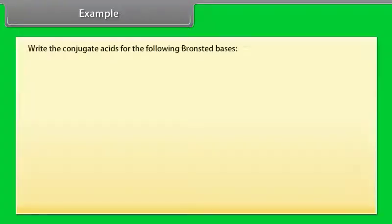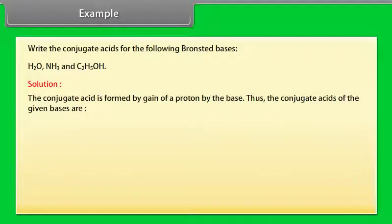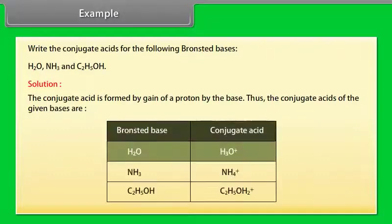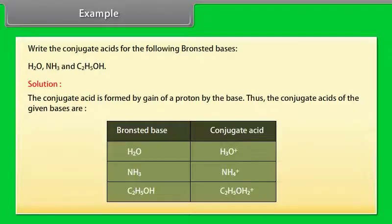Example: Write the conjugate acids for the following Bronsted bases — H₂O, NH₃, and C₂H₅OH. The conjugate acid is formed by gain of a proton by the base. Thus: the conjugate acid of H₂O is H₃O⁺; the conjugate acid of NH₃ is NH₄⁺; and the conjugate acid of C₂H₅OH is C₂H₅OH₂⁺.